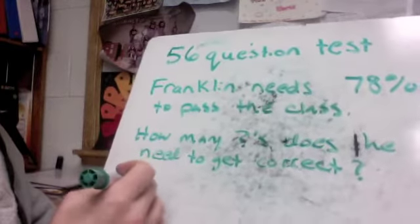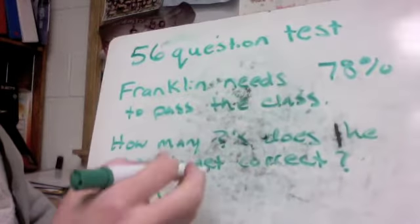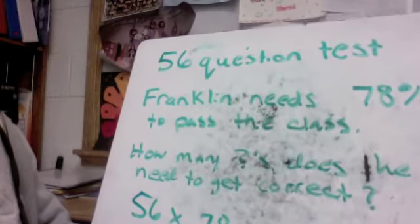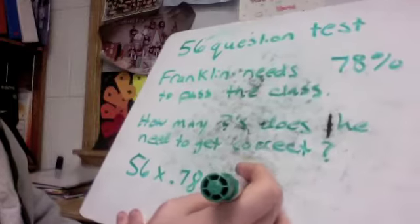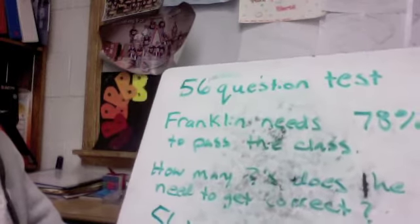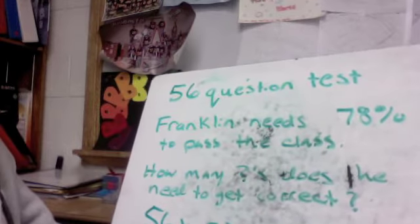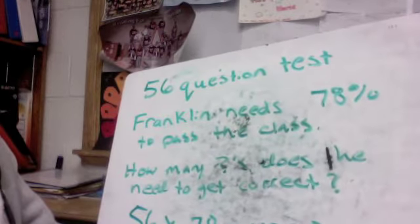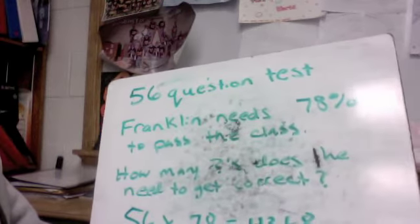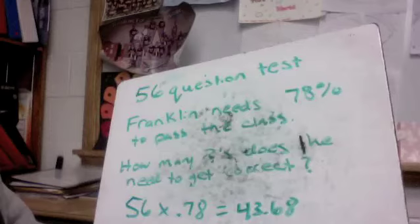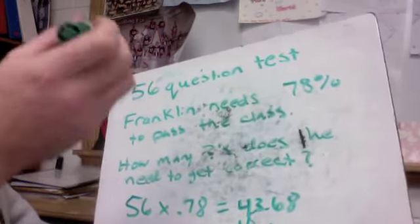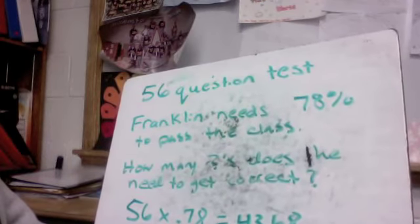He needs 78% out of the 56 questions. All we would have to do is take the 56 total and multiply it by that as a decimal, which would be 0.78. If I do 56 questions at 0.78, I come up with 43.68. So he needs 43 and 6,800 questions correct to get 78%. Now you've got to think about this in real terms. If he gets 43, he's not going to pass. If he gets 44, he is going to pass. So you would want to inform him that you better get 44 questions right, or you're not going to get that 78% because 43 is going to be too small. You would want to tell Franklin you need a 44 out of 56 if you want to make this happen.